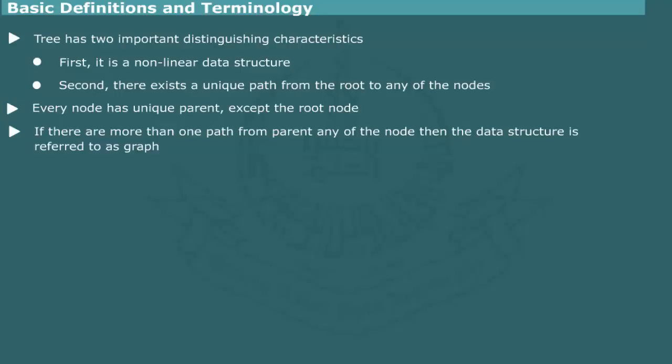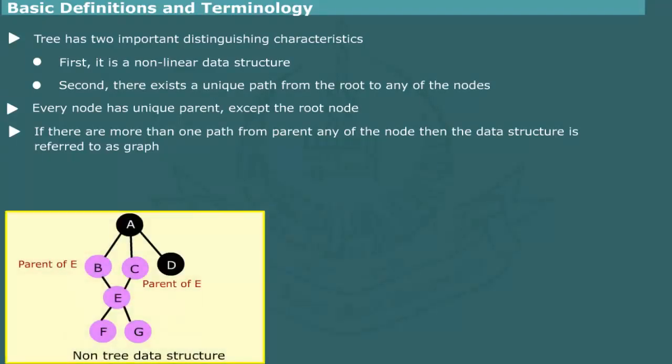It belongs to the data structure called graph. The figure shows an illustration in which node E has two parents, B and C. Also note that G has two paths to the root, namely G, E, B, A, and G, E, C, A. Thus, we conclude that data structure is not a tree.